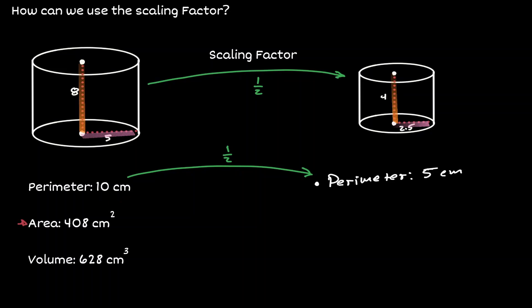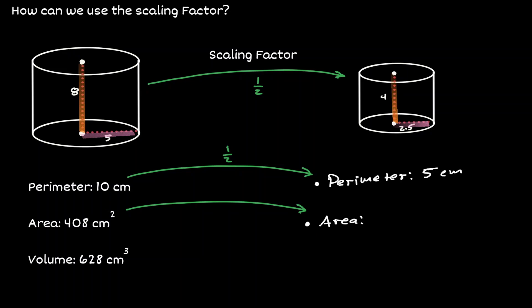But how about the area? Let's say we know that the area of the cylinder on the left is 408 centimeters squared. We have enough information to find the area of the cylinder on the right. We can use the scale factor, but now we're not going to multiply by 1 half — we square it. Notice that the units of area are always given in square units, so to obtain the area of a similar figure, we get the scale factor squared. If we take 408 and multiply by 1 half squared, we will obtain the area of the figure on the right.